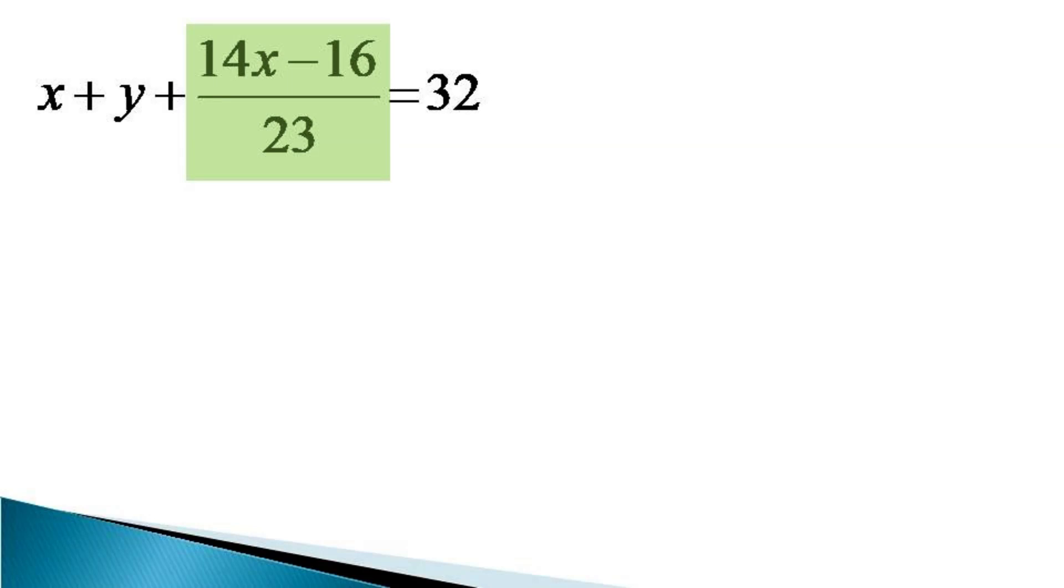This gives us a condition that 14x minus 16 by 23 should be equal to an integer. We do not give an algebraic value as the coefficient of x is non-unity. We want an expression where the coefficient of x is unity for the further solution of the equation. We will see it in the due course of time that why it is necessary.